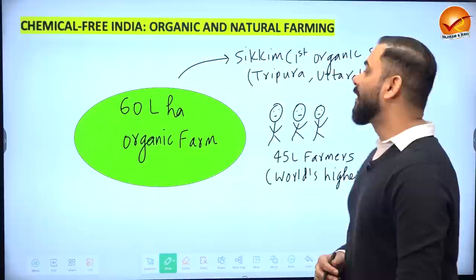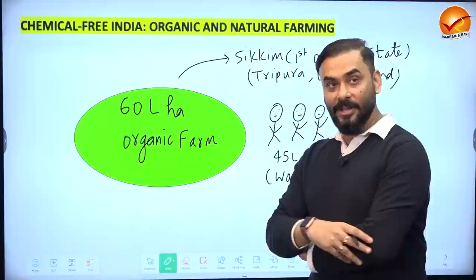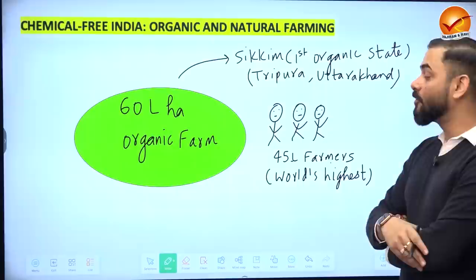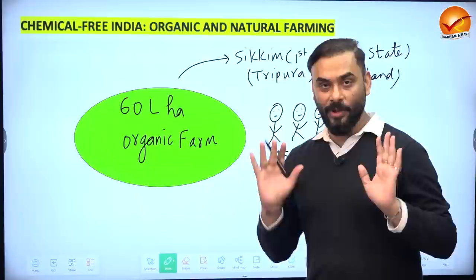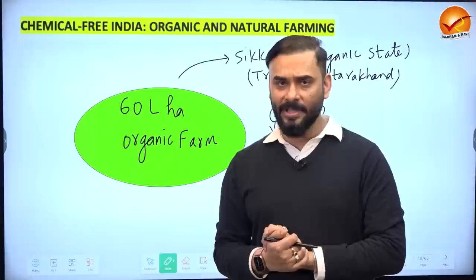The government is also promoting natural and chemical-free organic farming. Currently, about 60 lakh hectares of land is under organic farming in India, with 45 lakh farmers engaged — the world's largest number. Sikkim became the first fully organic state; Tripura and Uttarakhand are on the same track. Organic farming benefits farmers through better prices and is healthier because no chemicals enter the human body.